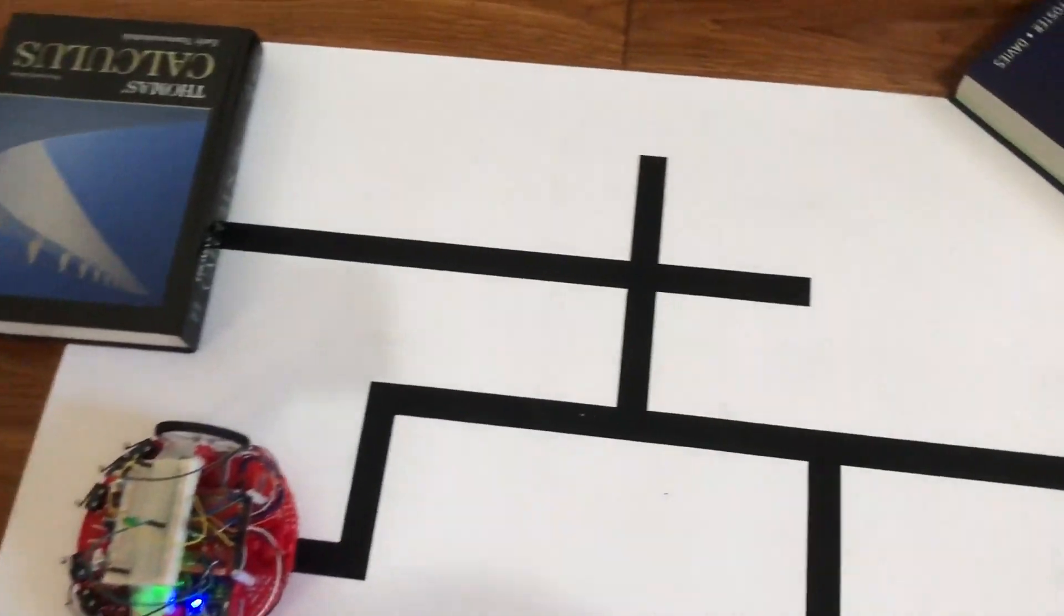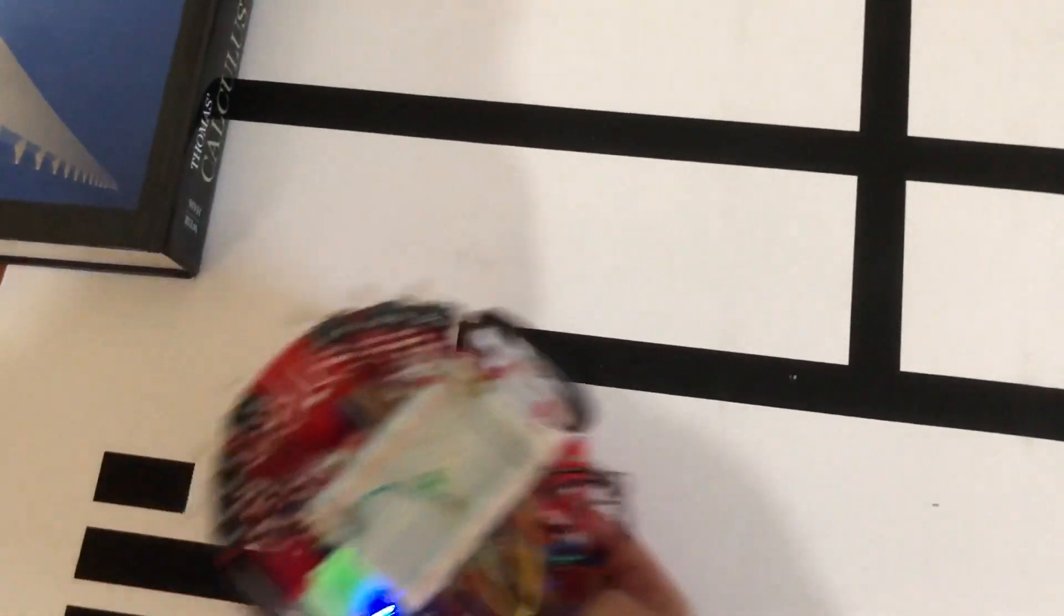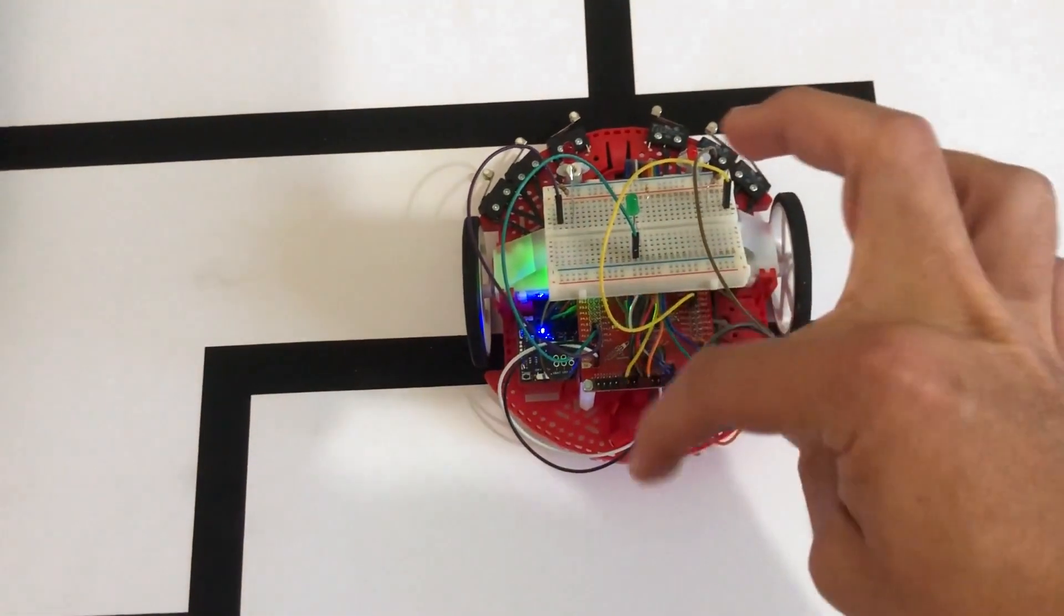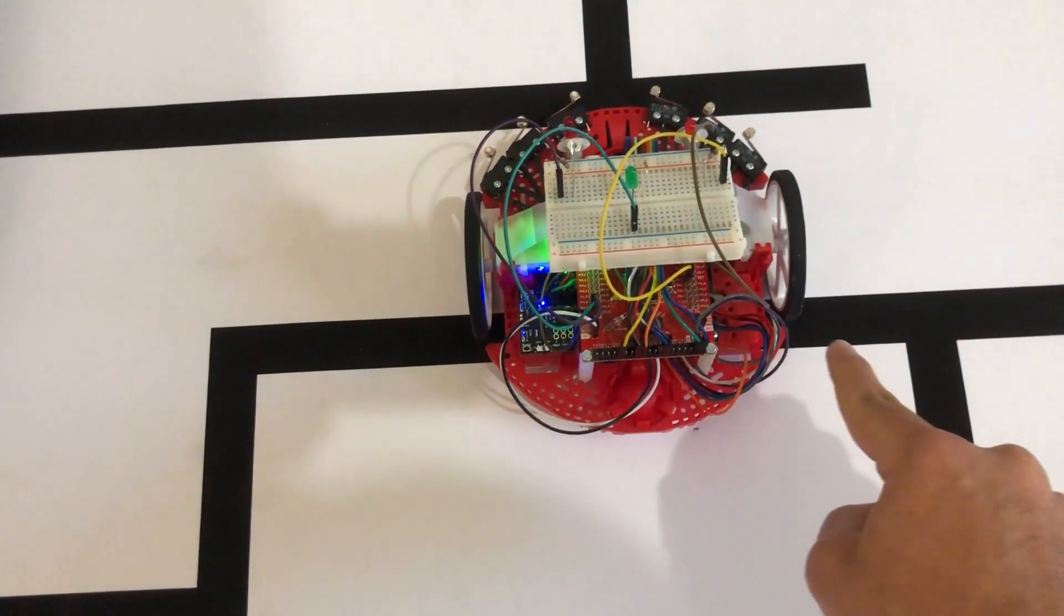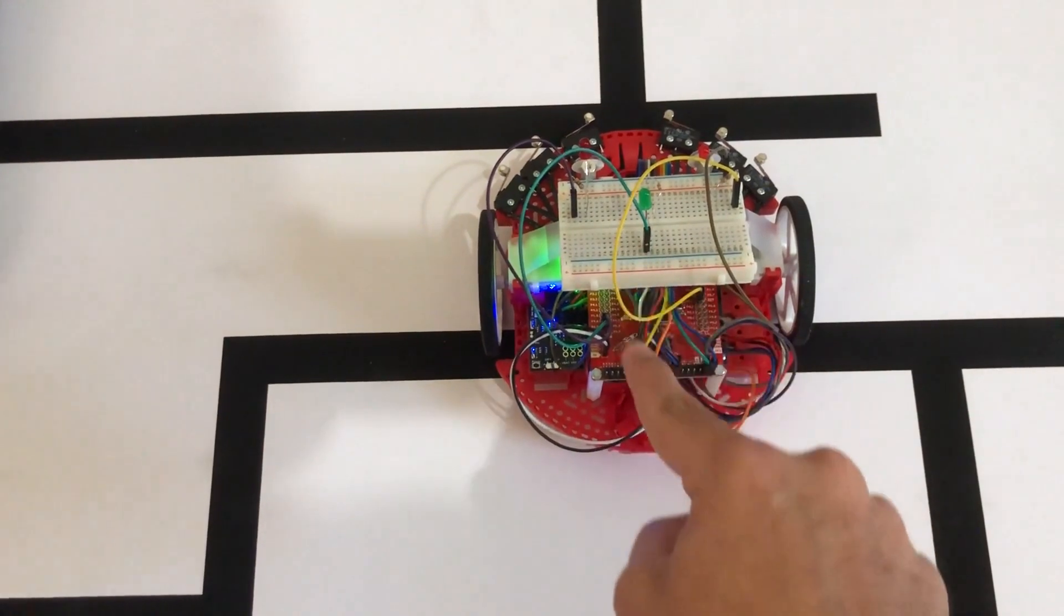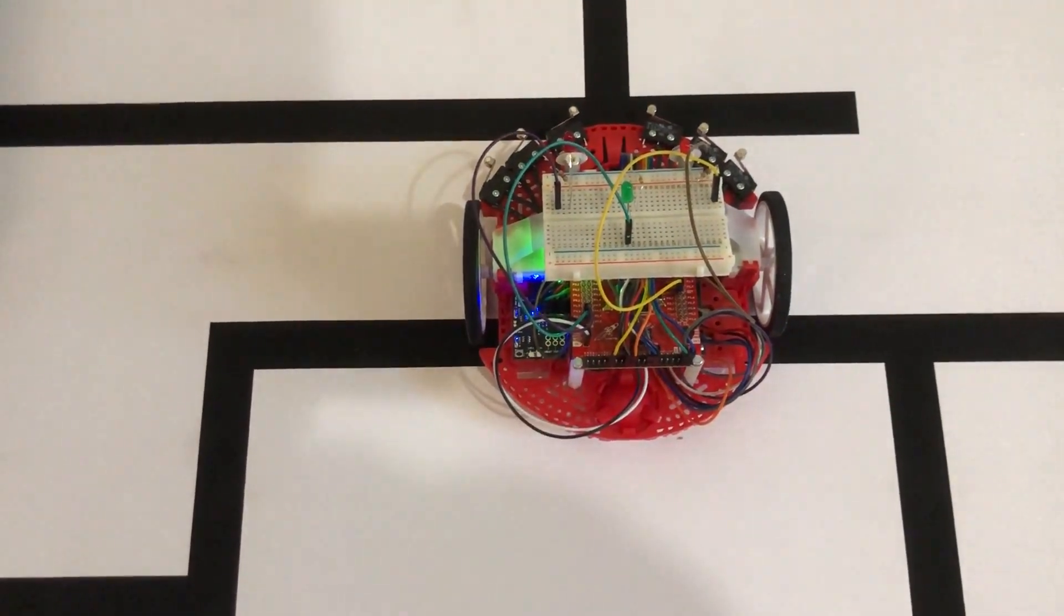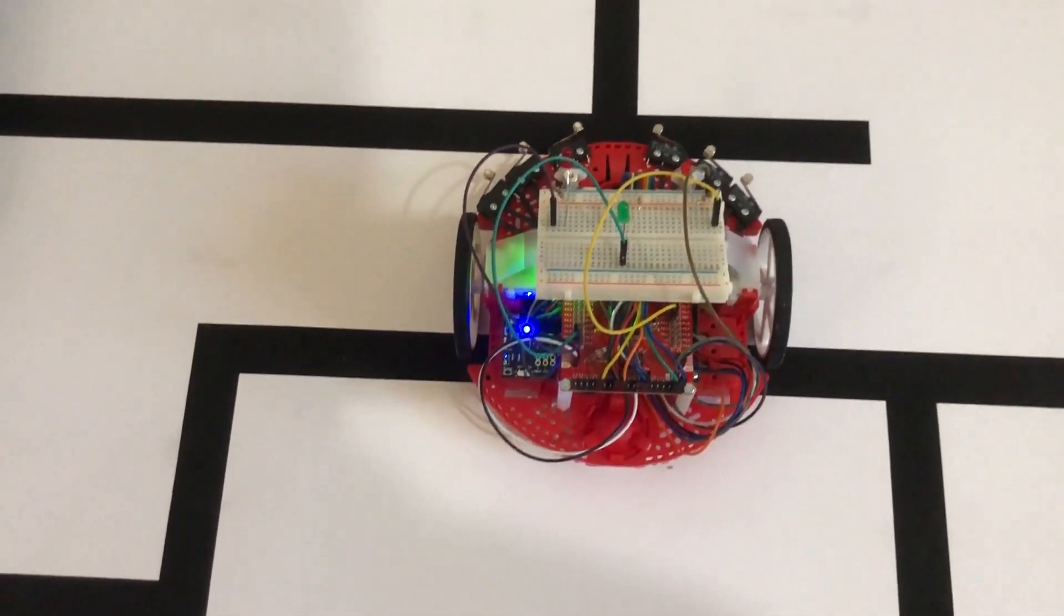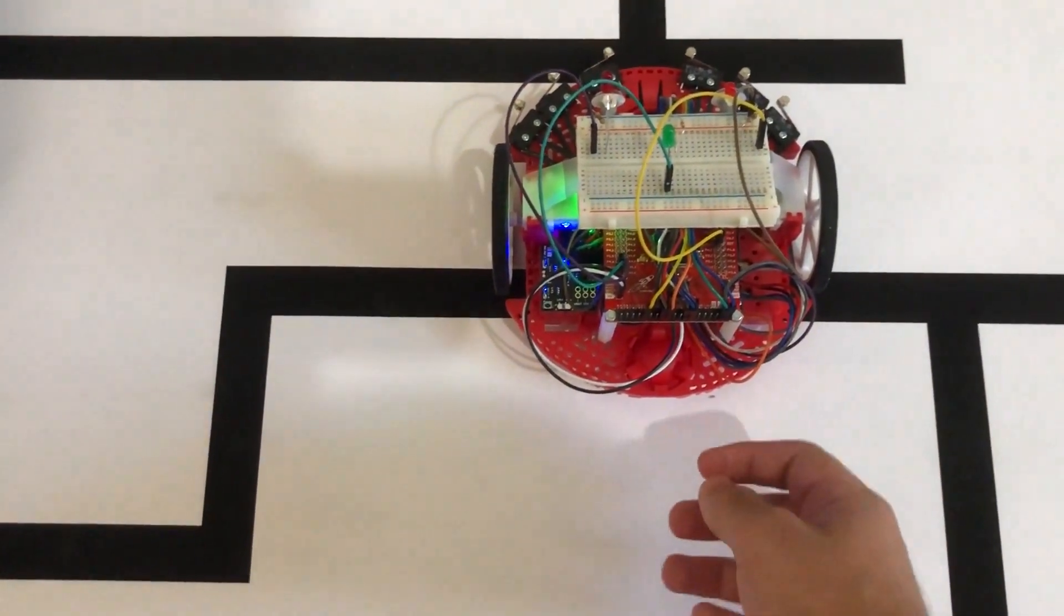The reason it does have to go forward before it turns around is because if I place it here and it just turns in place, the line sensor will be past this T intersection. It needs to be able to see the intersection to know to turn there. If it doesn't know the intersection exists, it can't turn there, so it moves forward a little bit and then turns around when started in the middle of the maze.